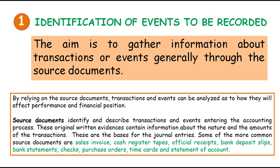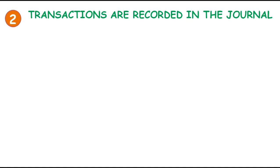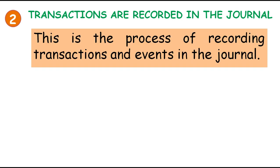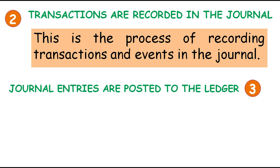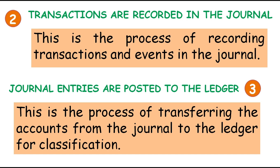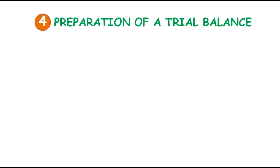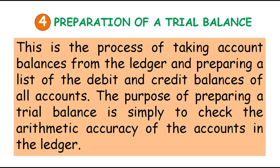The second step is transactions are recorded in the journal. This is the process of recording transactions and events in the journal, also known as journalization. Step three: journal entries are posted to the ledger — the process of transferring the accounts from the journal to the ledger for classification. The fourth step is preparation of a trial balance. This is the process of taking account balances from the ledger and preparing a list of the debit and credit balances of all accounts. The purpose is to check the arithmetic accuracy of the accounts in the ledger.